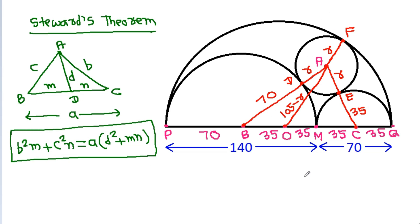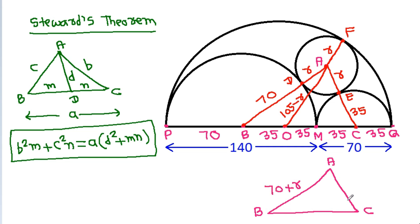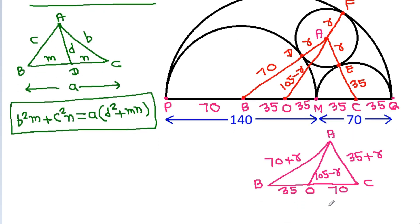Here, in triangle ABC, AB is 70 plus R, AC is 35 plus R. This point is O. BO is 35, CO is 35 plus 35, which is 70. AO is 105 minus R. And BC is 105.